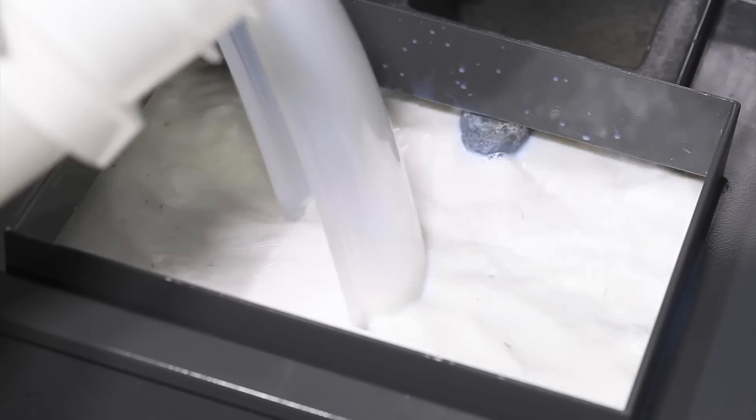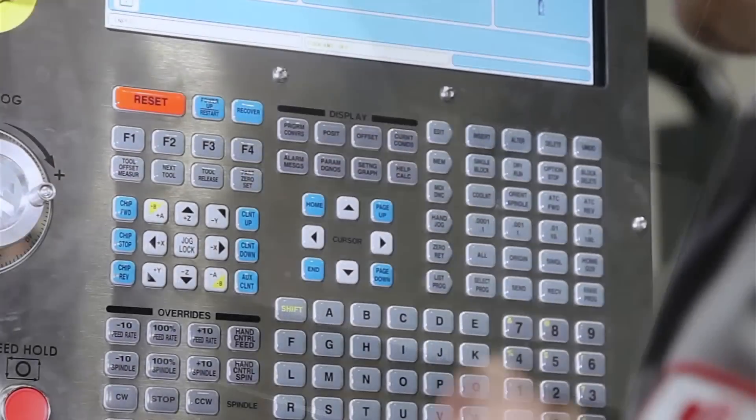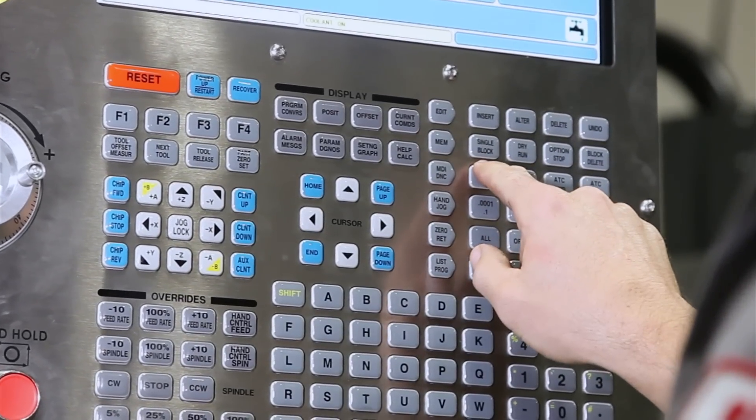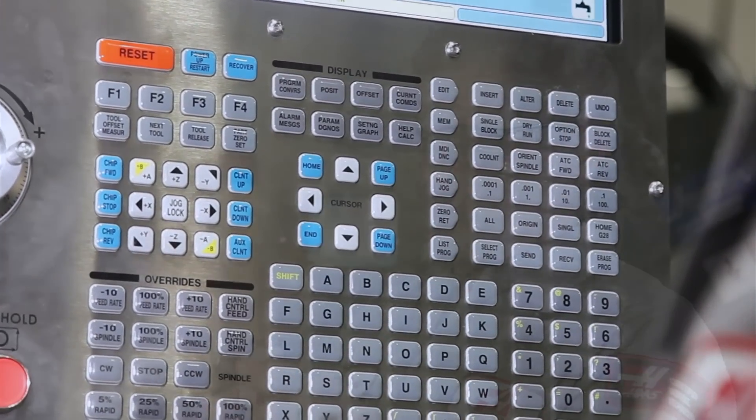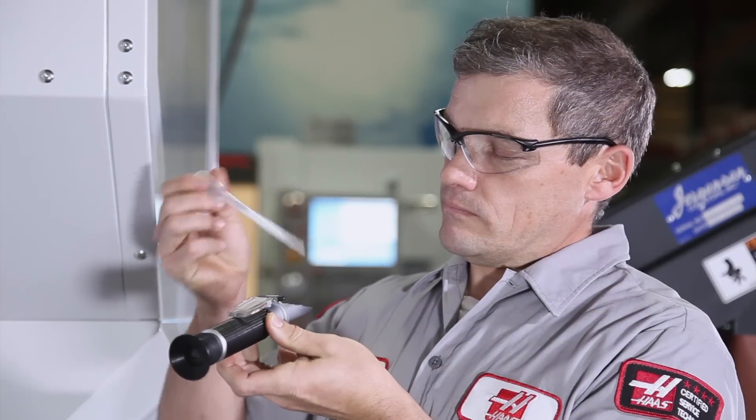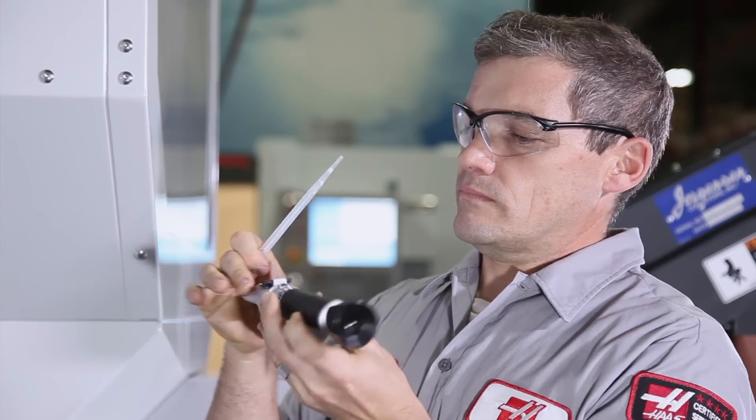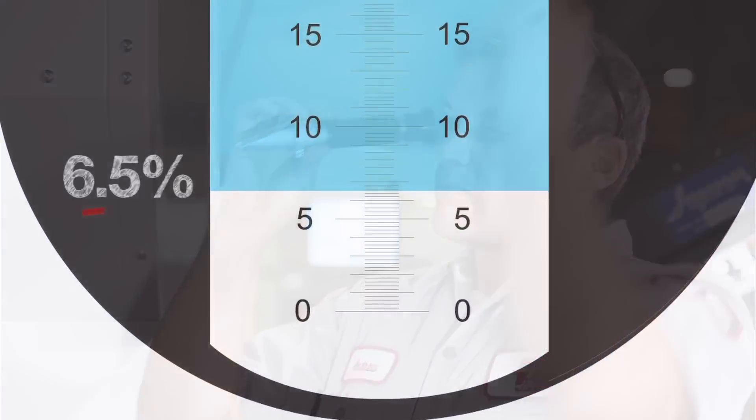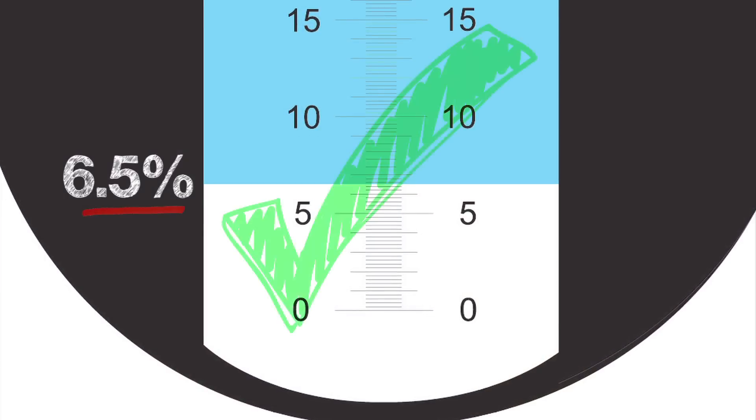With the tank full, run the coolant system for 30 minutes to ensure that everything is completely mixed. Check the concentration. We get a reading of six and a half percent. This coolant is ready to go.